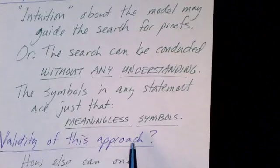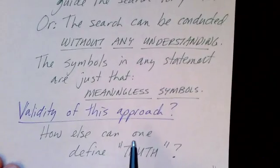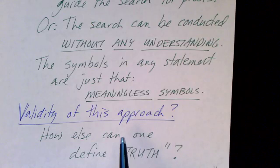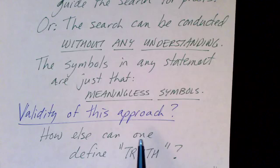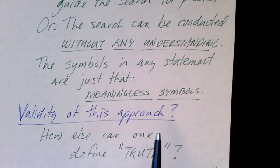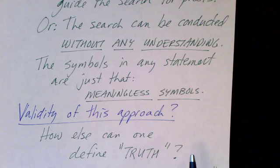As long as the algebraic manipulations are correct, then the proof can be found. And you can reasonably ask, is this approach valid? If somebody finds a proof without understanding the model, without really having any understanding of the model, but only doing mechanical manipulations of symbols, is that really a valid proof?